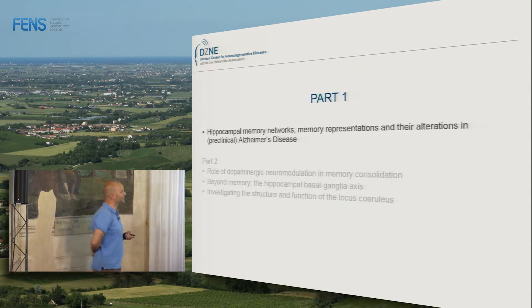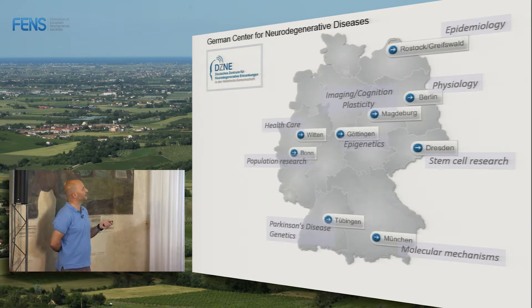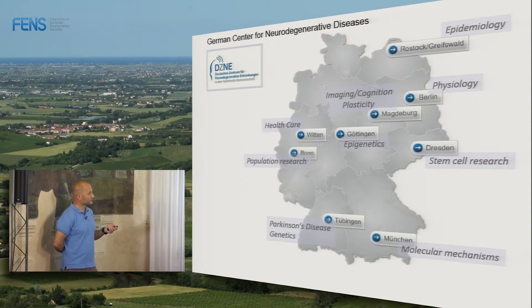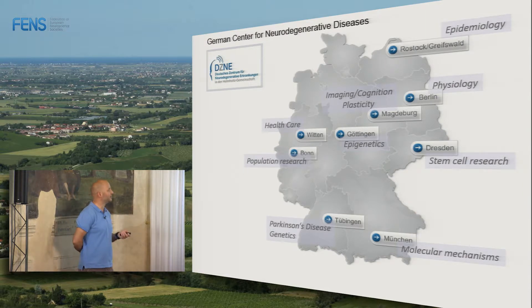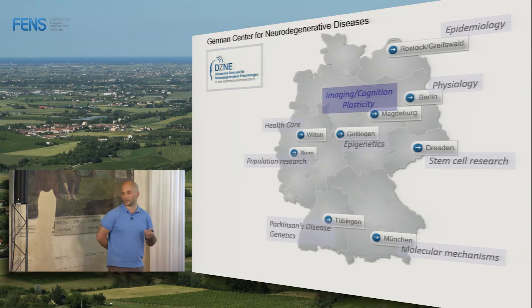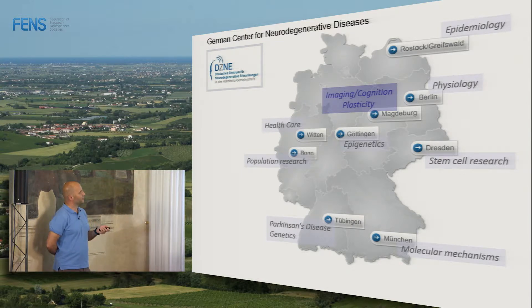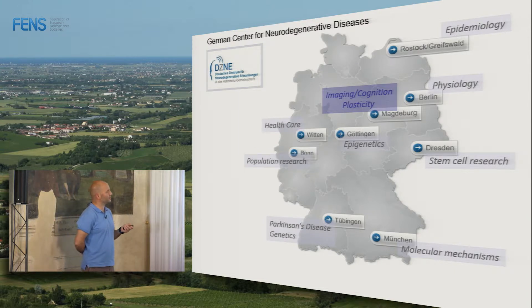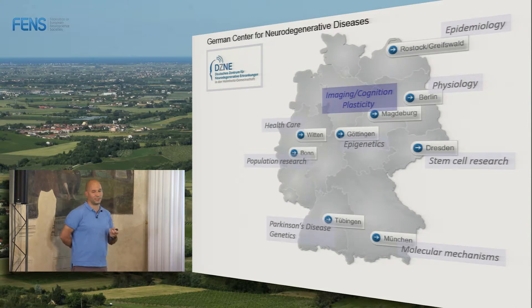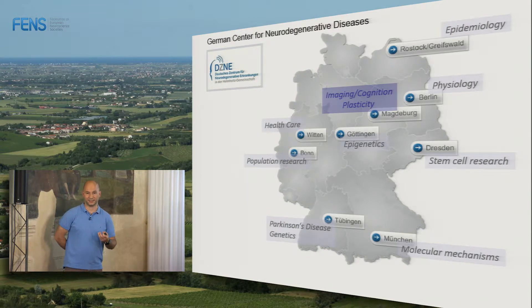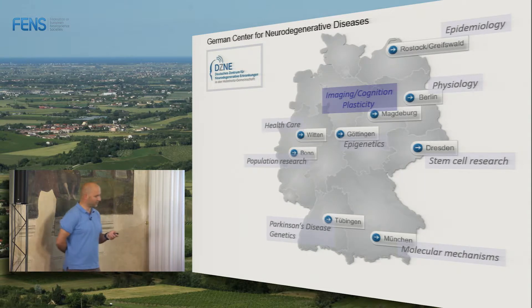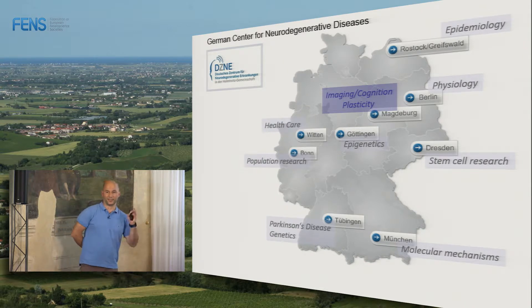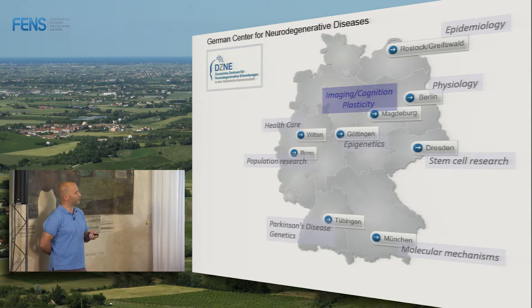Let's start with part one. This is the newly established German Center for Neurodegenerative Diseases — a government institute with several different sites, though one administrative entity. We are at the Magdeburg site and our main focus of research is imaging, cognition, and plasticity. The interesting aspect about this structure is that you can do large-scale studies and achieve large sample sizes, because it works as one network with very harmonized protocols and research methods across the sites.